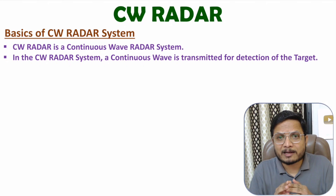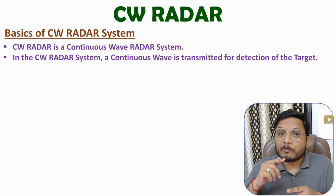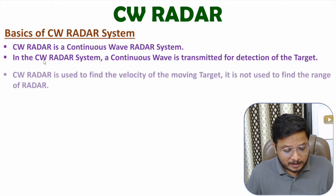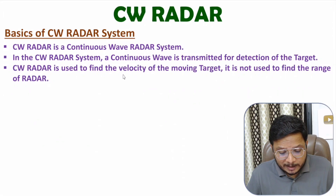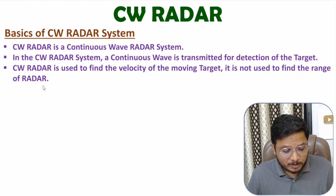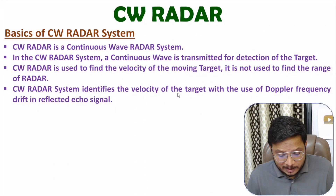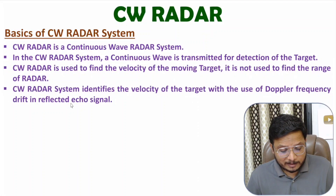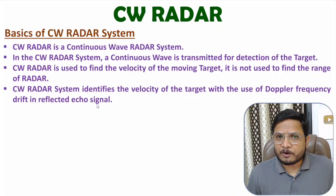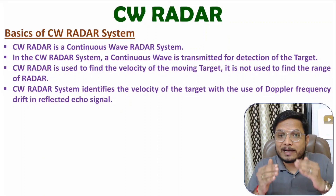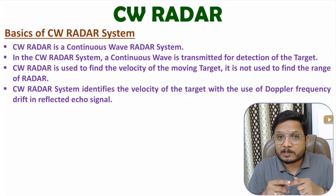In CW radar system, we will be identifying the velocity of the target. CW radar system is used to identify the velocity of a moving target; it is not used to find the range of the target. CW radar system identifies the velocity of the target based on Doppler frequency drift in the reflected signal. In my last video I explained the Doppler effect and how to identify velocity based on frequency drift.